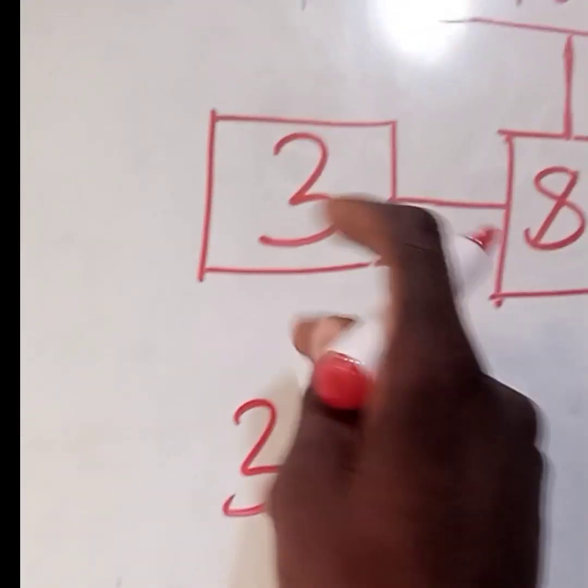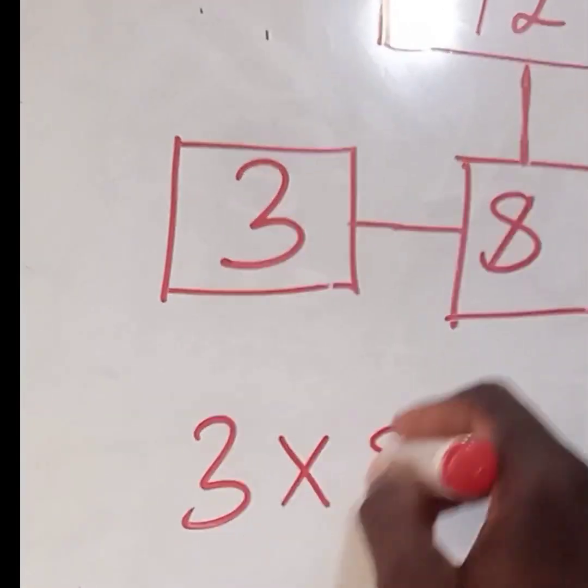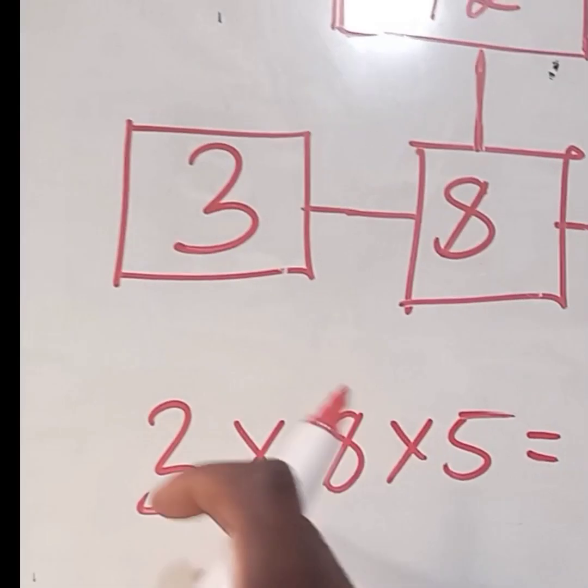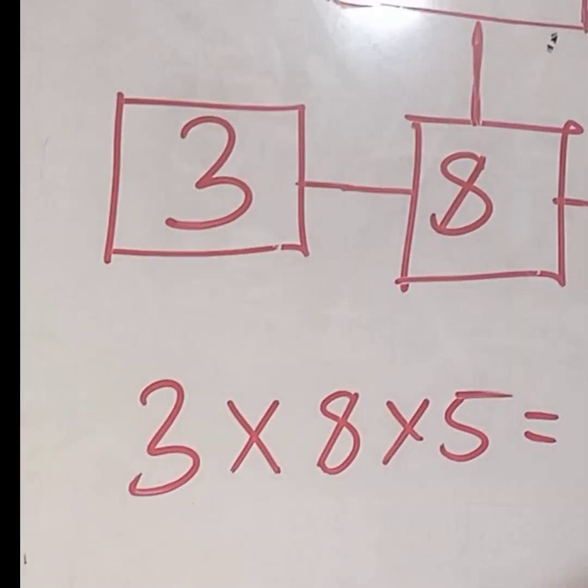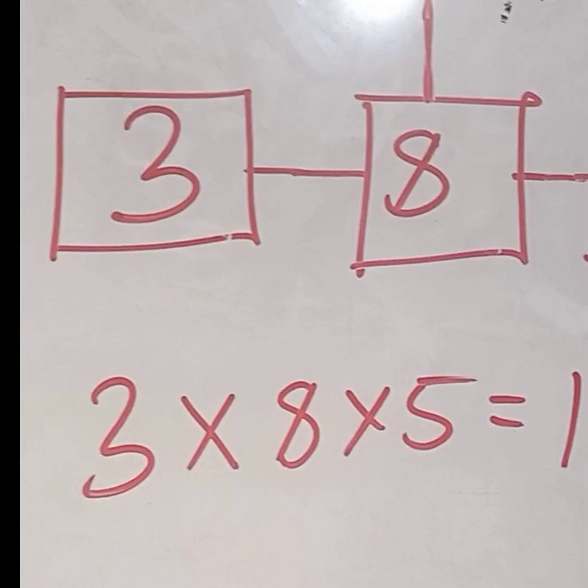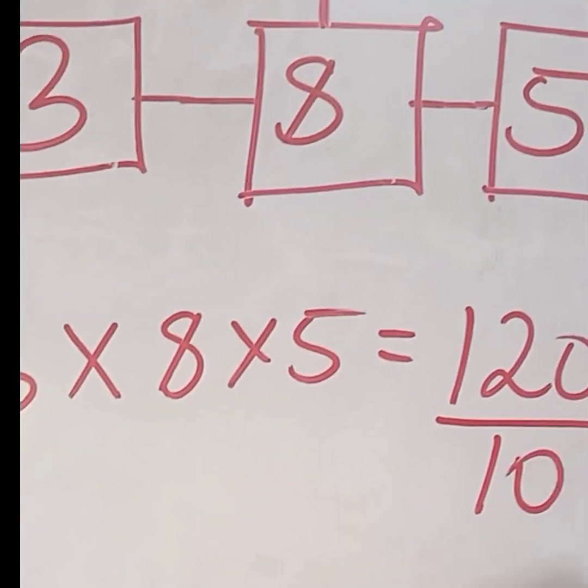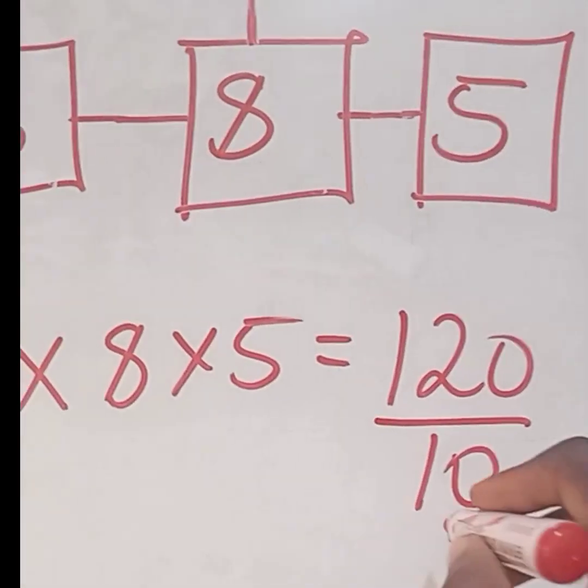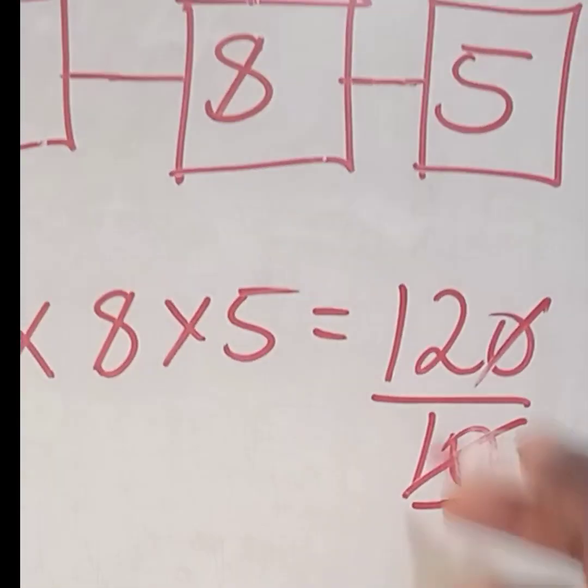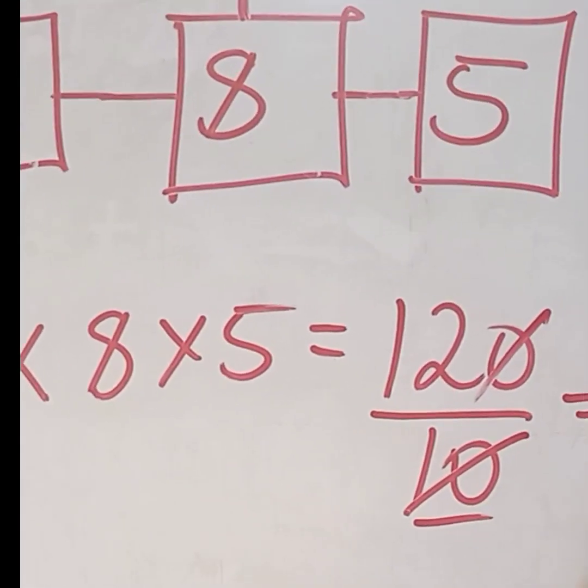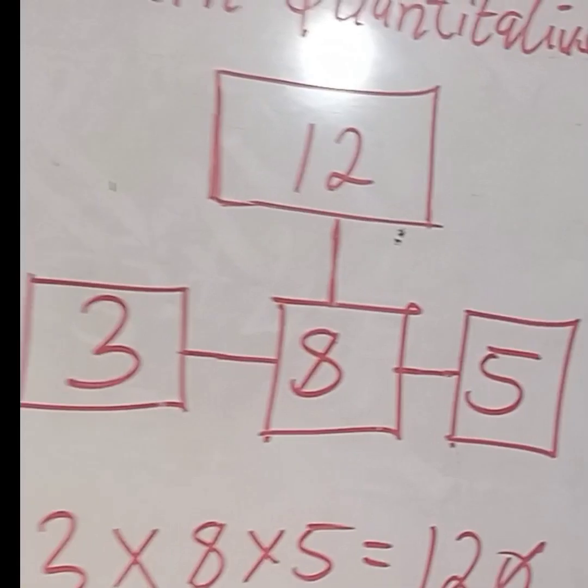We are going to multiply all the down numbers. That is 3 times 8 times 5. 3 times 8 is 24. 24 times 5 is 120. So 120 divided by 10. Remember this 10 is constant. So 10, 0 will cancel 0. 12 divided by 1. Your answer is 12. So this is how to get the 12 up there.